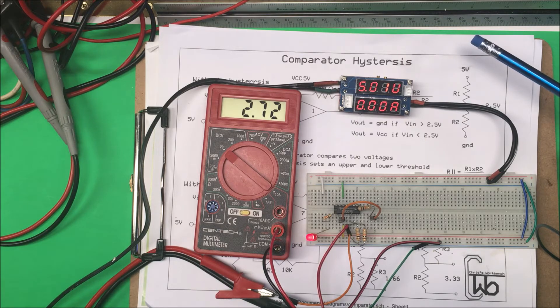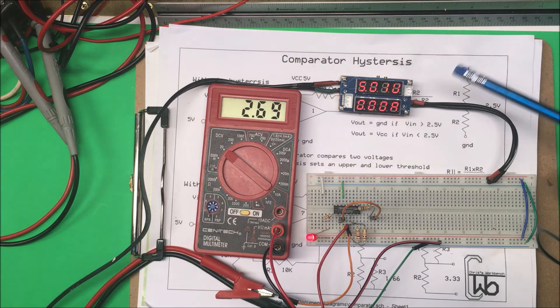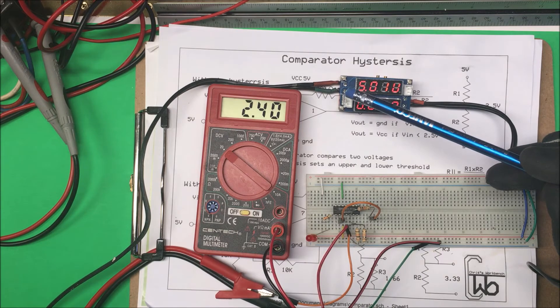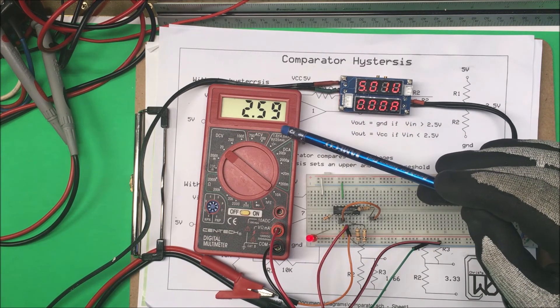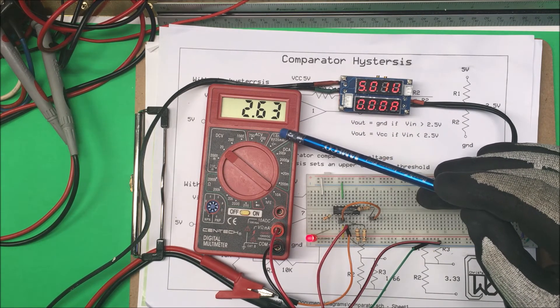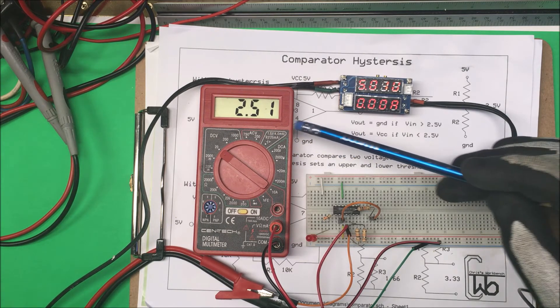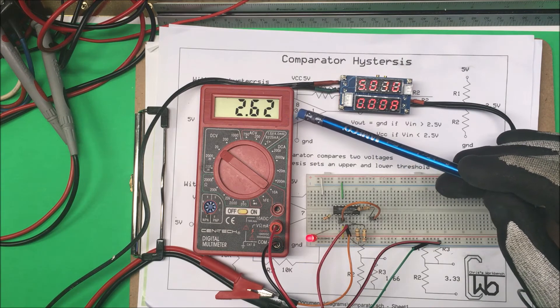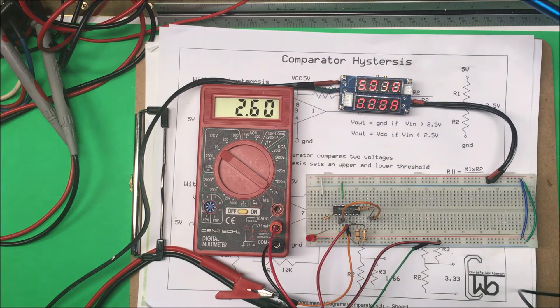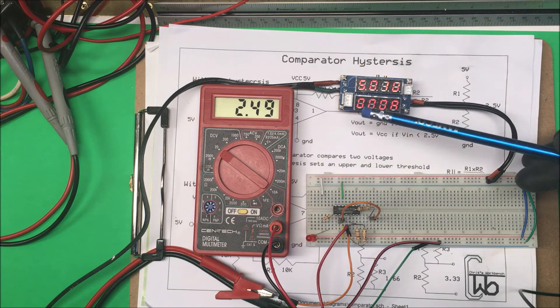There we go, so it turned on. Let me try that again. It should be turning on at 2.5, it turns on about 2.6 volts, and it goes off as soon as it drops below that. So on and off, on and off right there.